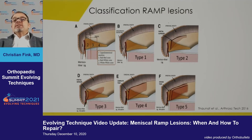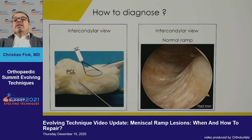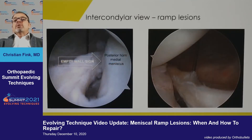The classification we have seen before — there are different types of these tears. This is a tear we haven't known much about until about 10 years ago, because we can only see it when we really inspect the meniscus posteriorly. That means we need ideally an intercondylar view, though a 30-degree scope works well. To the right you see how a normal ramp looks, and these are the typical ramp lesions — a gap between the wall of the meniscus and the synovial attachment.